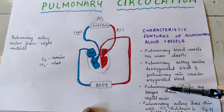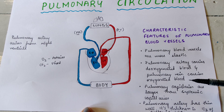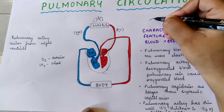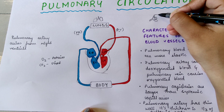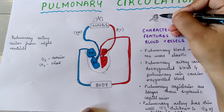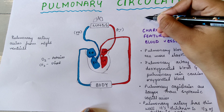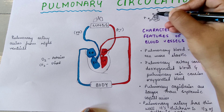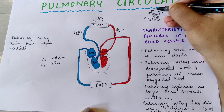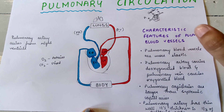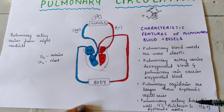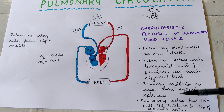The third point is that pulmonary capillaries are larger than systemic capillaries. The capillary is where the exchange of gases takes place — the artery comes in, exchange occurs at the capillary, and the vein comes out. These capillaries in the lungs are larger compared to other body parts. Also, the pulmonary artery has a thin wall — its thickness is one third of the systemic aorta.